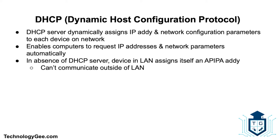DHCP, or Dynamic Host Configuration Protocol, is a network management protocol used on IP networks whereby a DHCP server dynamically assigns an IP address and other network configuration parameters to each device — such as PCs, printers, servers, and routers — so they can communicate with other IP networks. A DHCP server enables computers to request IP addresses and networking parameters automatically, reducing the need to manually assign addresses. Without a DHCP server, devices must be manually assigned an IP address or use an APIPA address, which does not allow communication outside the local network.